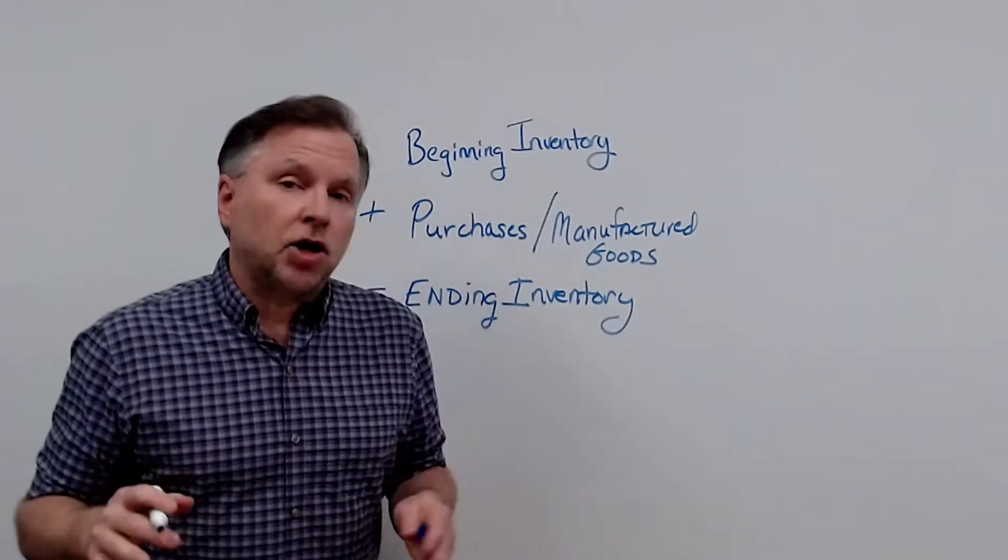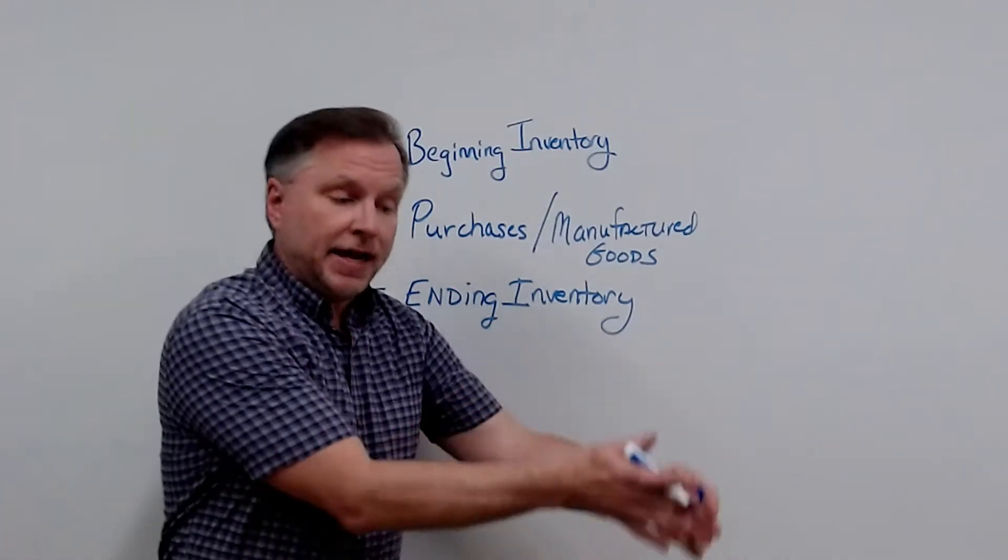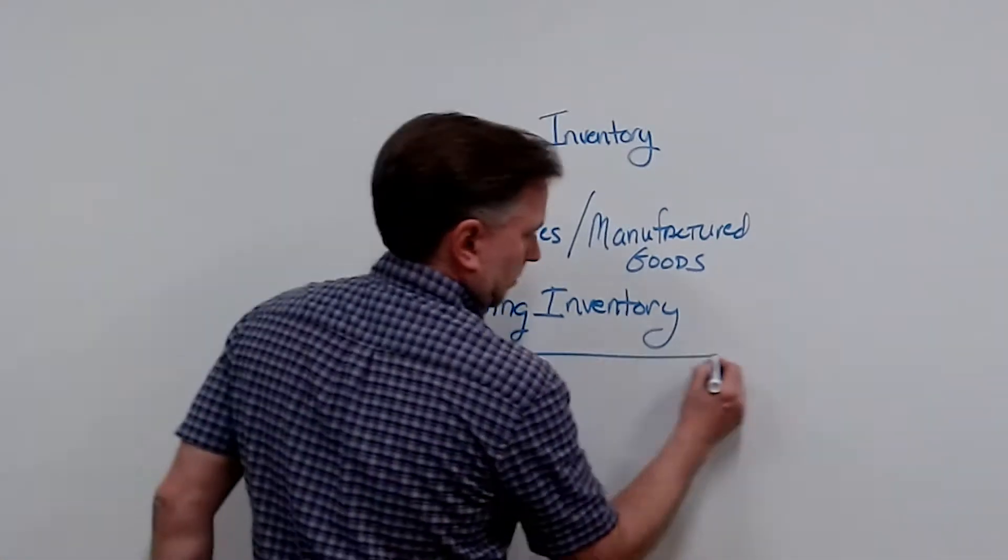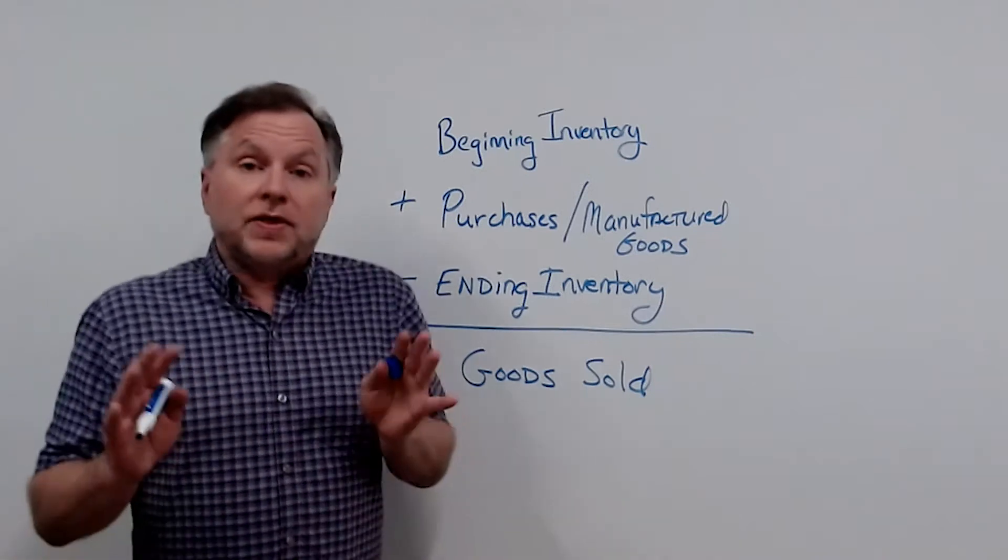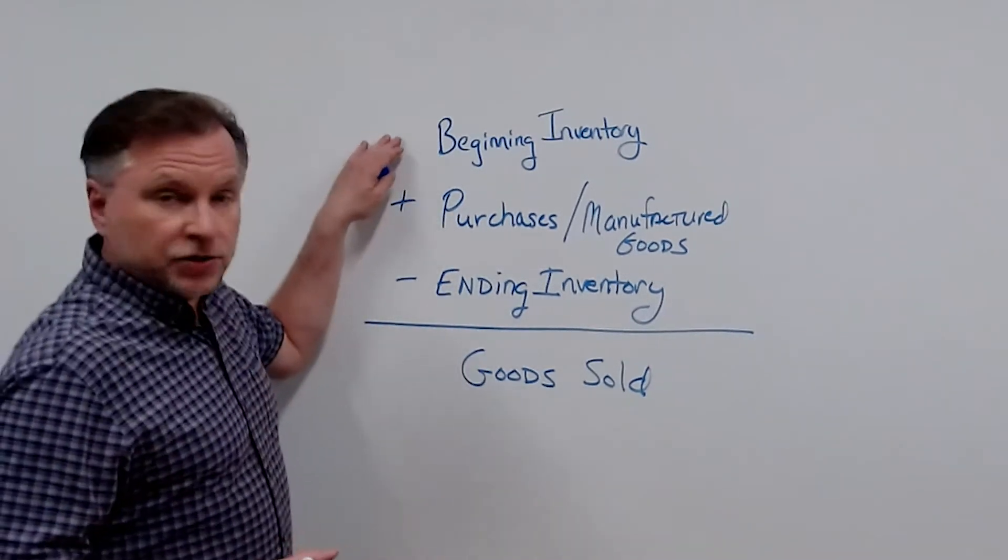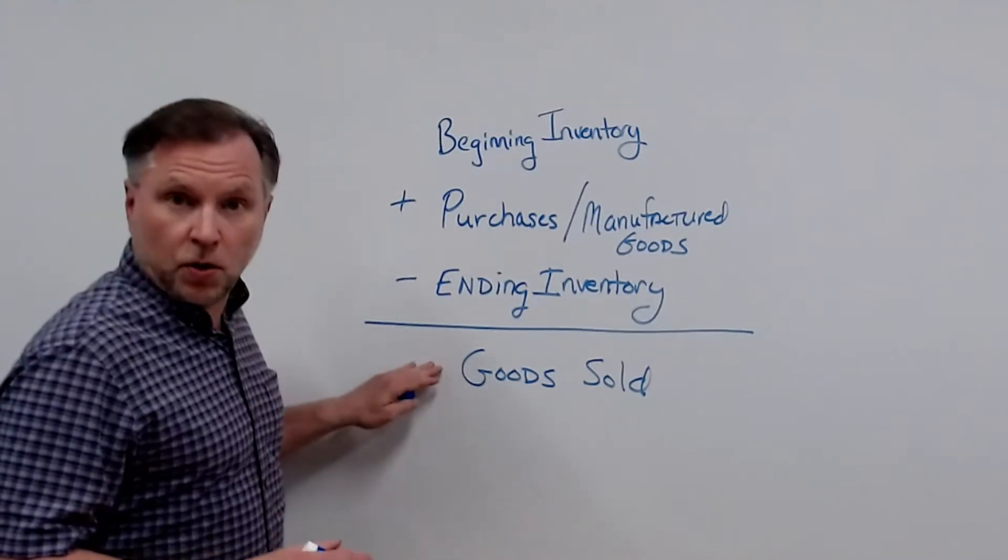Next, we're going to subtract our ending inventory. That's what we have left over at the end of our financial period, or at the end of the month. So that gives us our goods that are sold. So our beginning inventory plus our purchases, less our ending inventory, equals our goods sold.